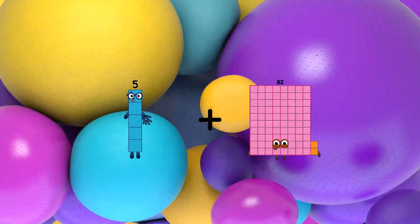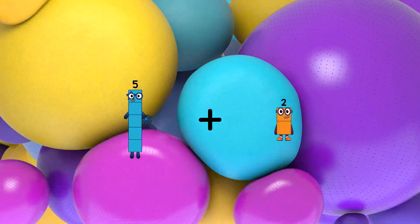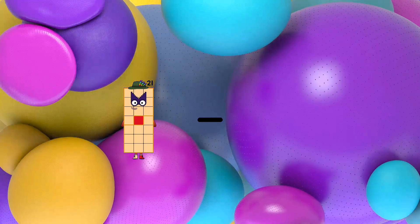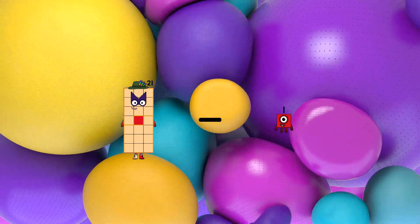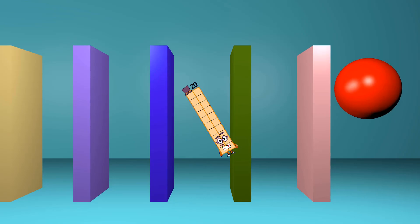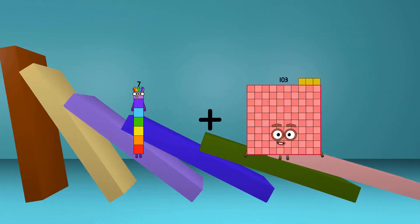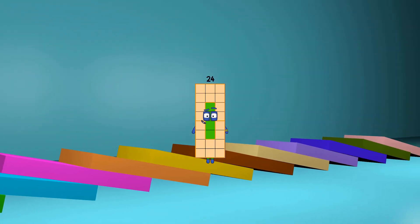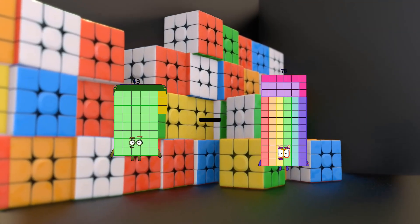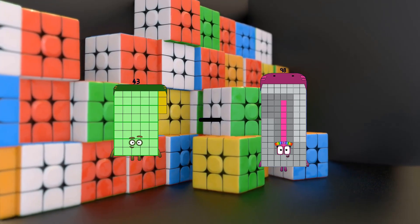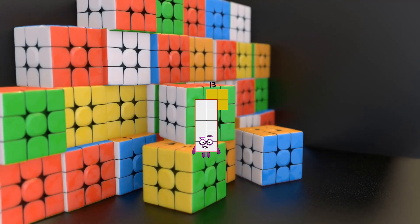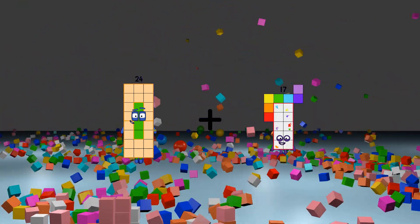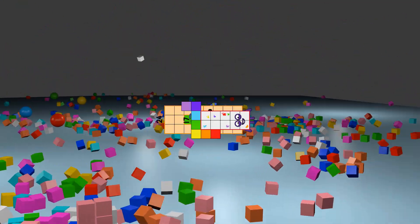5 plus 2 equals 7, 21 minus 1 equals 20, 7 plus 17 equals 24, 43 minus 30 equals 13, 24 plus 17 equals 41.